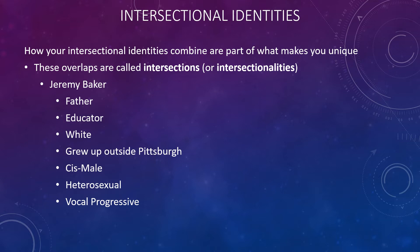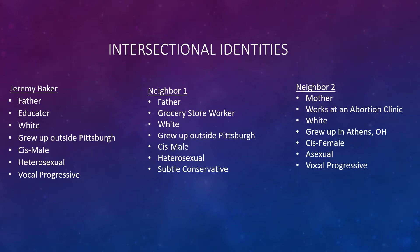For example, I am a father. I am an educator. I am white. I grew up outside Pittsburgh. I am a cisgender male. I am a heterosexual, and I am politically and vocally progressive. Those are my intersectional identities. We can compare these with other intersectional identities of other people — these are actually two of my neighbors. My neighbor one is a father, he works in a grocery store, he is also white, he also grew up outside Pittsburgh, he is cis male, he is heterosexual, and he is a subtle conservative.